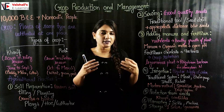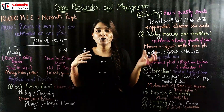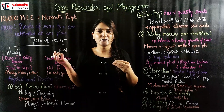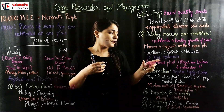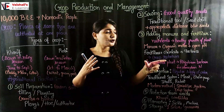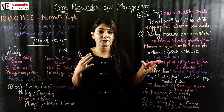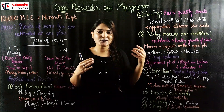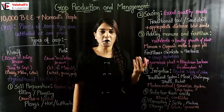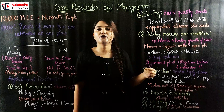In crop rotation, leguminous plants are grown after wheat or maize because they have rhizobium bacteria in their roots which fixes atmospheric nitrogen, making the soil nitrogen-rich. This avoids the need to use fertilizers and manure when this type of crop rotation is practiced.